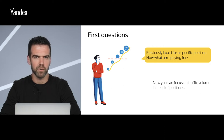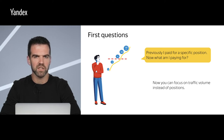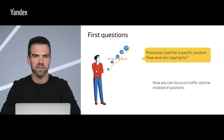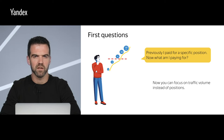If you previously set bids to make it to first premium placement, two things could happen. First, you might not have been making it to first premium placement, depending on your competitors' bids. Second, even though you might have made it to first premium placement, you might not have been getting as many impressions as you expected. In the new system, your position may vary, but you can be certain that your ad will get the traffic volume you paid for.